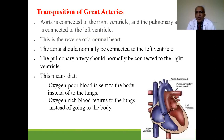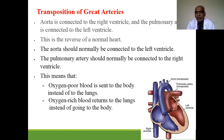The next cyanotic heart disease is TGA — transposition of great arteries. The aorta is connected to the right ventricle and the pulmonary artery to the left ventricle, which is the reverse of normal. This results in oxygen-poor blood being sent to the body and oxygen-rich blood going to the lungs instead of the body.